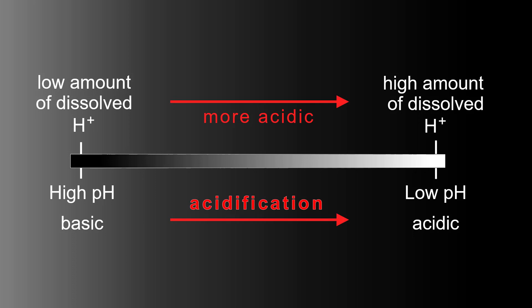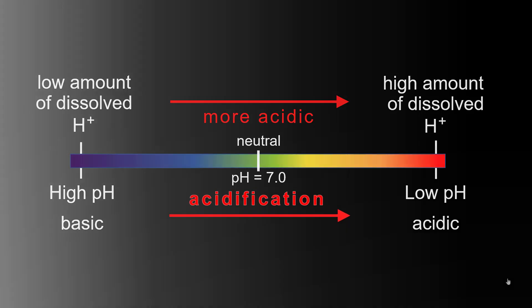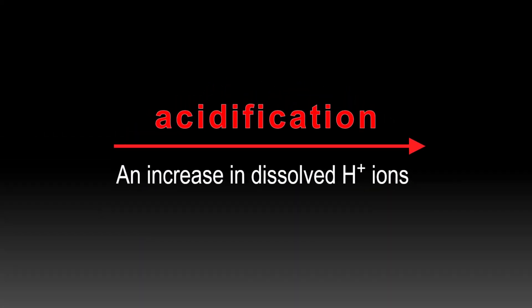In the laboratory we have ways of identifying how basic or acidic something is by the color occurring on a universal indicator. Right in the middle, kind of a greenish, is neutral — the pH is 7. So acidification is an increase in dissolved hydrogen ions. Make sure you remember that.